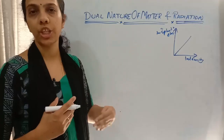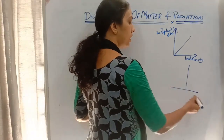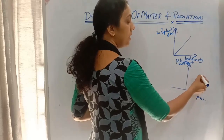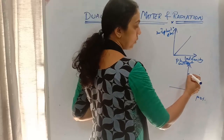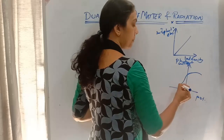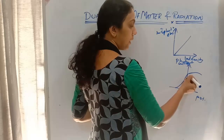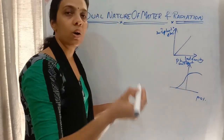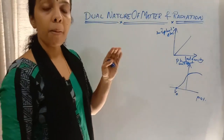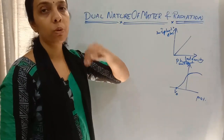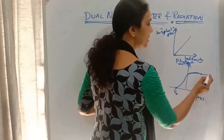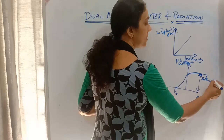Next, we learned about the variation between potential and photo current. As we increase the potential, after a particular value the photo current remains the same — this is called saturation current. When we decrease the potential, the number of photoelectrons decreases and reaches a minimum. This minimum negative potential is called stopping potential, represented as V₀.